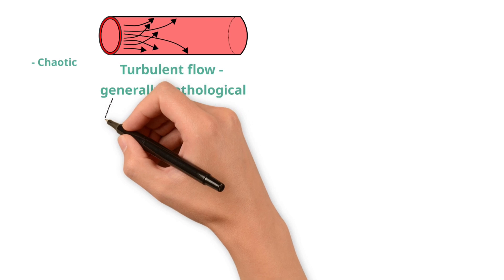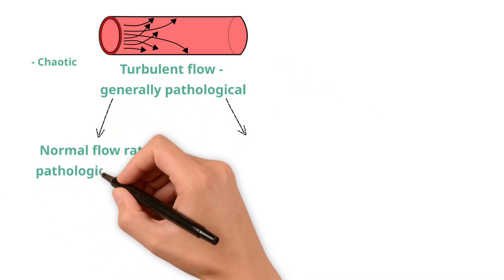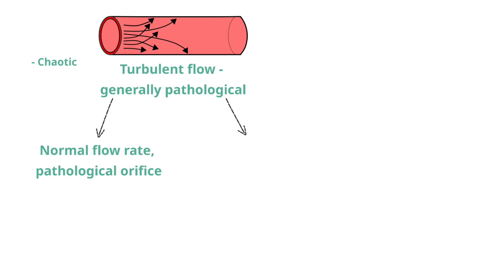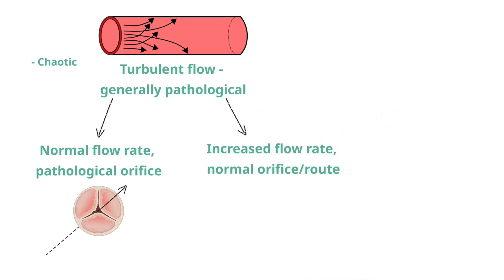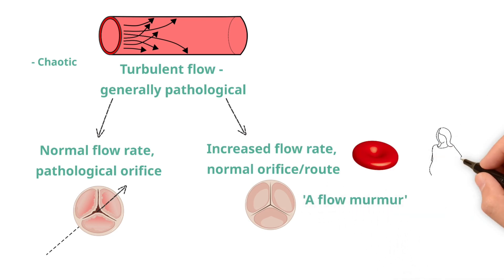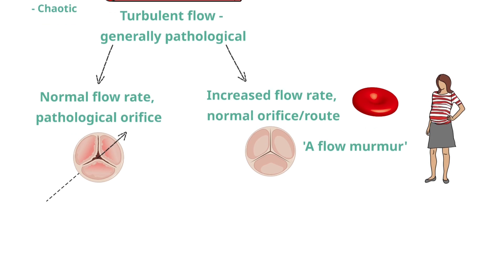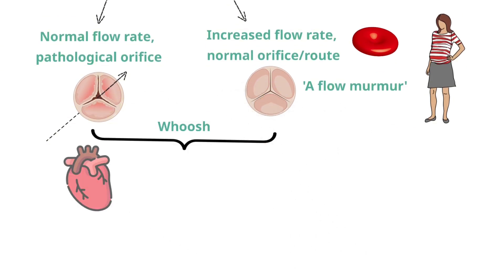There are generally two causes of turbulent flow. Firstly, where a normal amount of blood travels through a pathological or narrow orifice — for example in aortic stenosis where blood is forced through a narrowed aortic valve orifice. Secondly, where a supranormal amount of blood travels through a normal or non-pathological route — for example a flow murmur in an anaemic or pregnant patient. Turbulent blood flow can create an audible whooshing sound on auscultation. If this occurs due to blood flow in the heart, it's called a murmur; if it occurs from the vasculature, it's called a bruit.